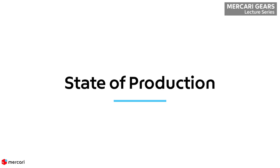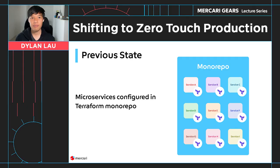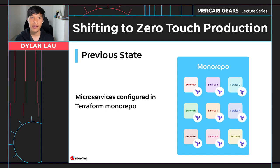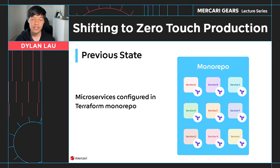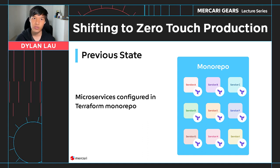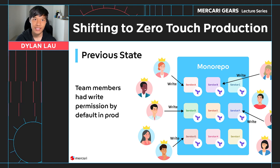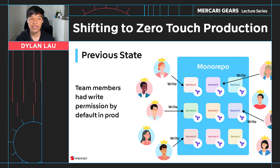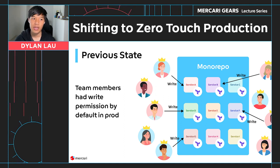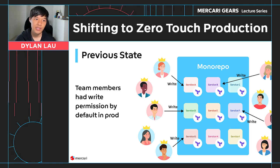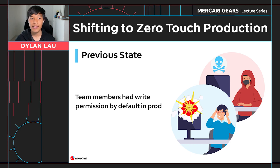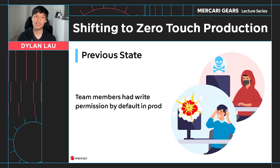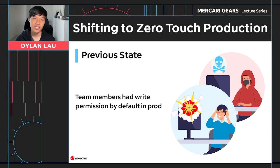With this concept of zero-touch production in mind, let's review our current state of production. At Mercari, we have all of our microservices configured in a Terraform monorepo, and we have SRE as a practice, not a dedicated role. This means that teams have full ownership of their microservice and handle running their service as well, including maintaining uptime and handling incidents. In the early days of adopting SRE practices internally, many took the simpler route and had team members have write permissions in production by default for a fast response to incidents, making them vulnerable to manual operation errors and malicious intent or compromised credentials.